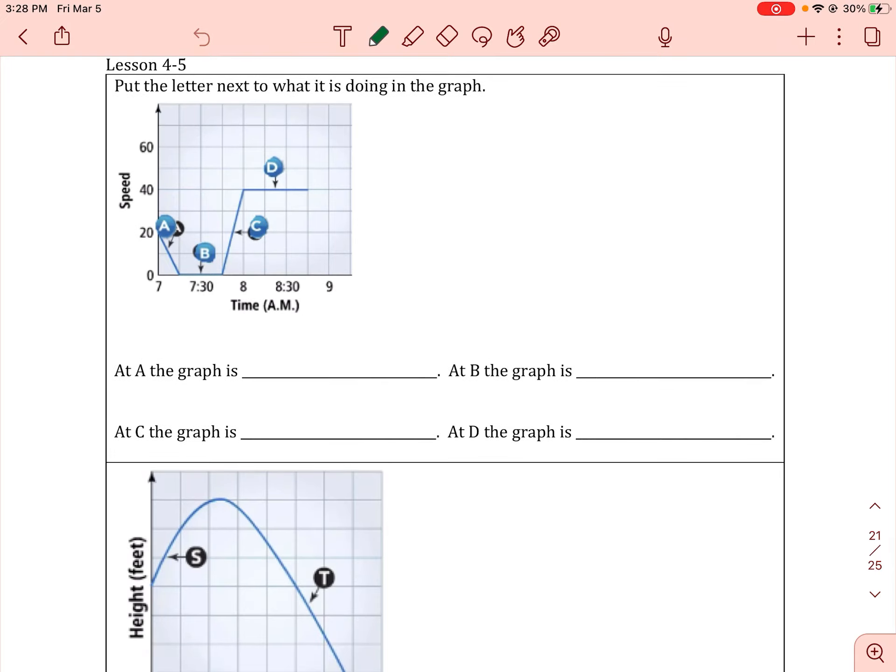So this first one, at A, so here's A. At A, the graph is decreasing. And then at B, the graph is constant, or remaining constant.